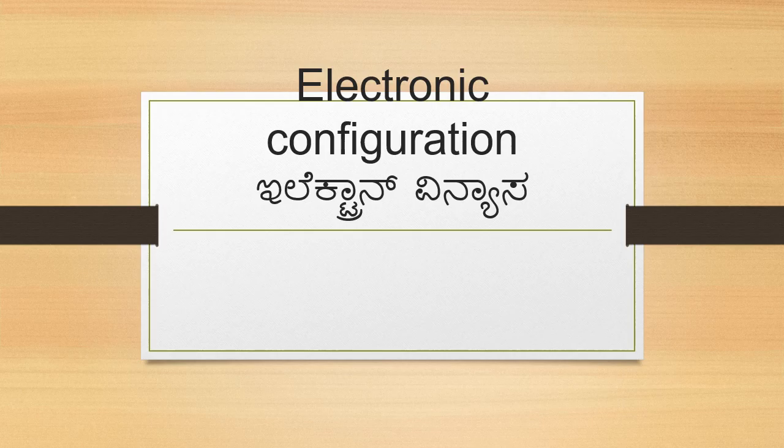Hello my dear SLC students. In this video I am going to discuss about electronic configuration — how electrons are distributed in different elements. So, what is electronic configuration? It is a distribution of electrons in an atom.